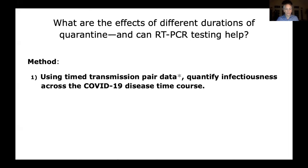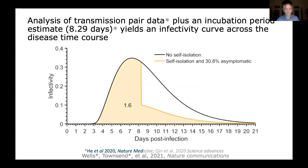Using time-transmission pair data to quantify infectiousness, results were borrowed from studies by Hay et al. and Quinn et al., yielding an incubation period of 8.29 days and an infectivity curve showing a fairly abrupt increase in infectivity toward the end of the incubation period, then a slower decline. Importantly, if symptoms appear, individuals may self-isolate and reduce transmission, compared to asymptomatic persons who may not realize they are sick.